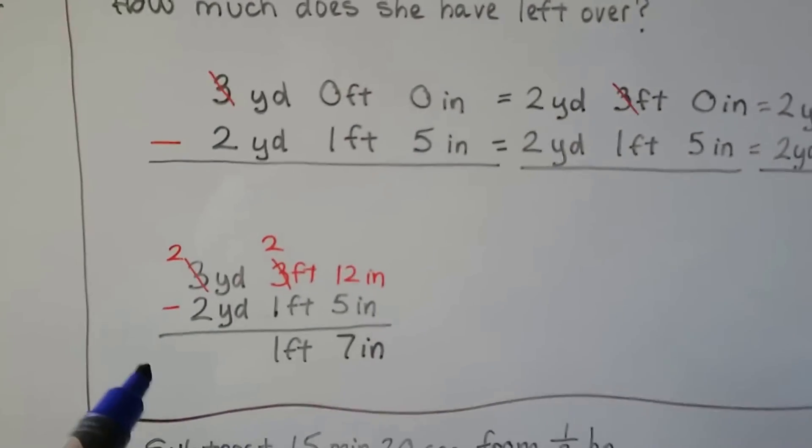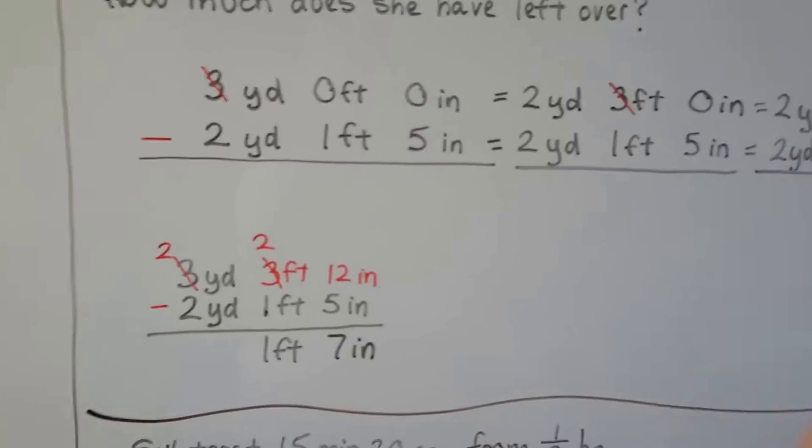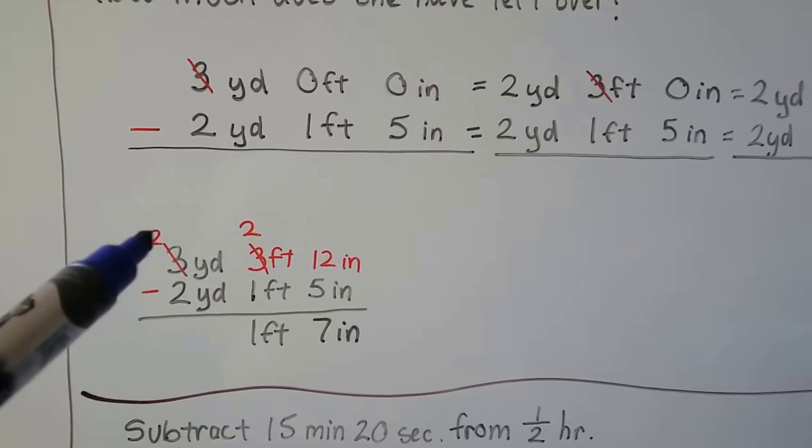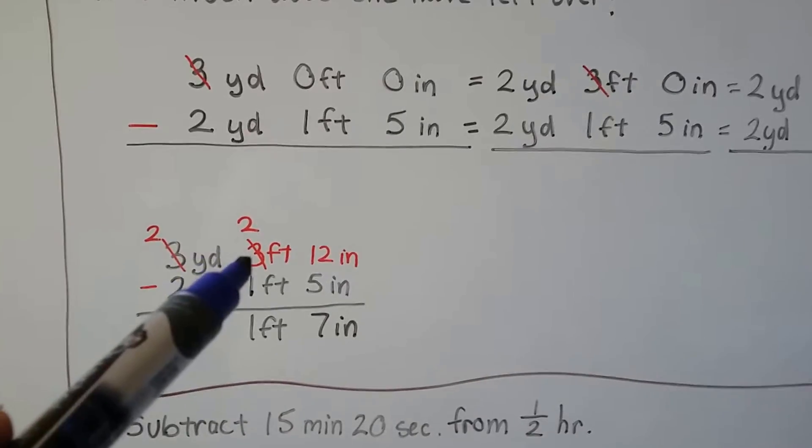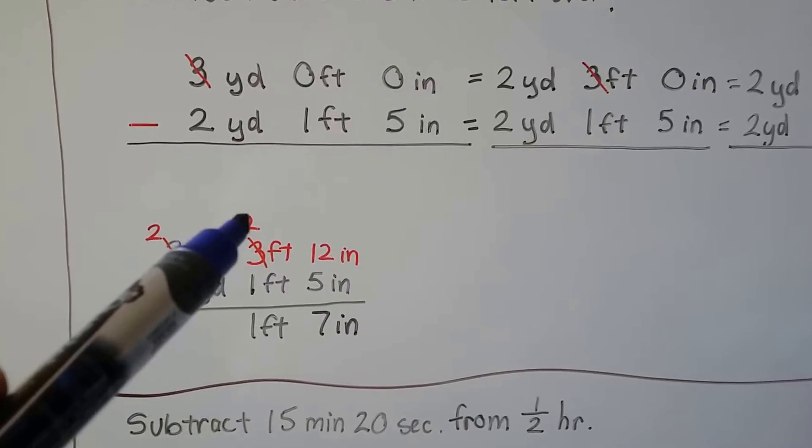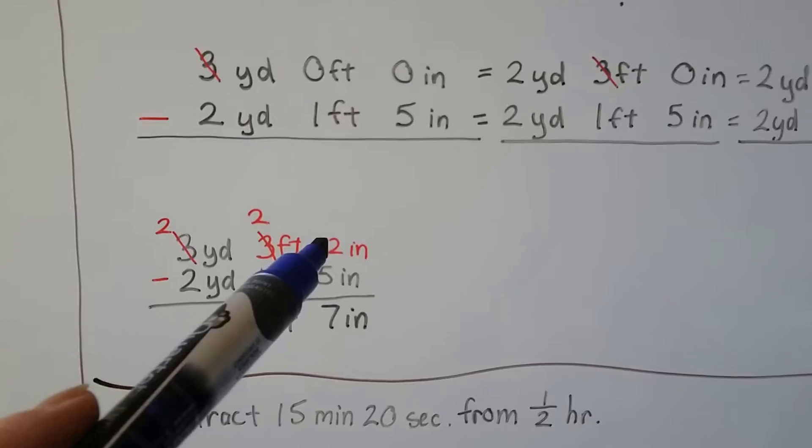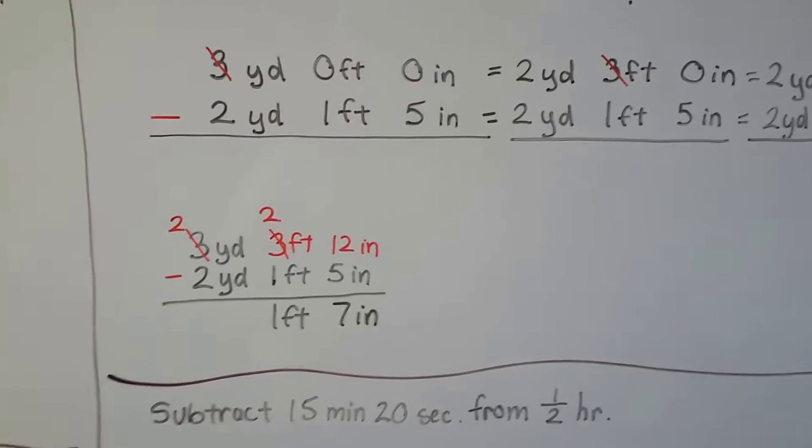If you want to look at it as a smaller version of the problem without having to write it out like that, we took a yard away. It became a 2. We gave the 3 feet to the feet area. We took 1 away and gave 12 inches to the inches, and then did our subtraction.